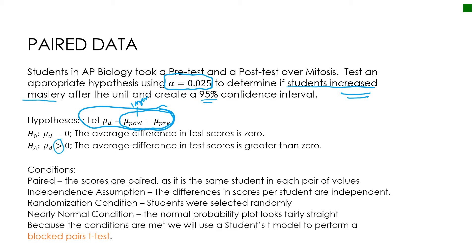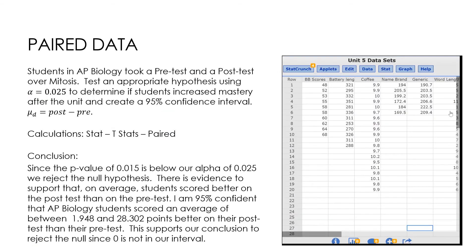I wrote that in words. Conditions — paired: the scores are paired as it's the same student before and after. Independence: the difference in scores per student are independent. Randomization: students were selected randomly. Nearly normal: the normal probability plot looks fairly straight — I'll show you on the next slide when we do the work in StatCrunch. Therefore the conditions are met. We'll use a Student's t-model to perform a blocked pairs t-test — blocked because it was an experiment where students were taught something between pre and post.